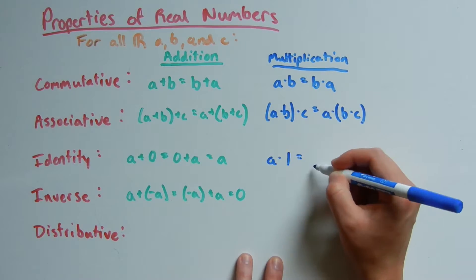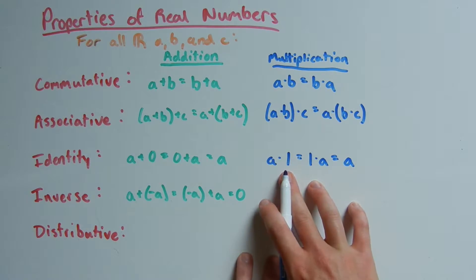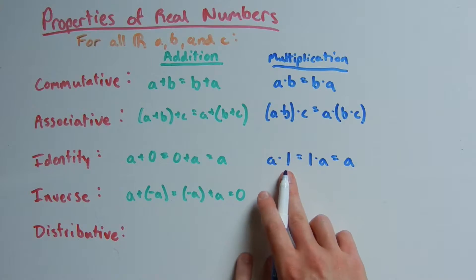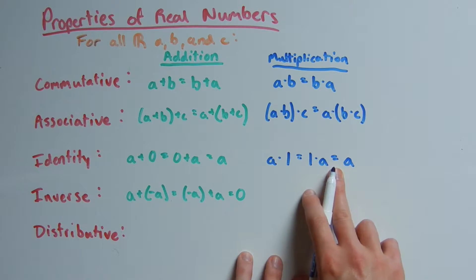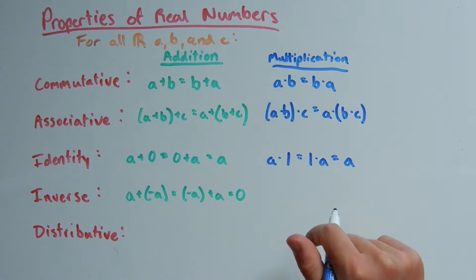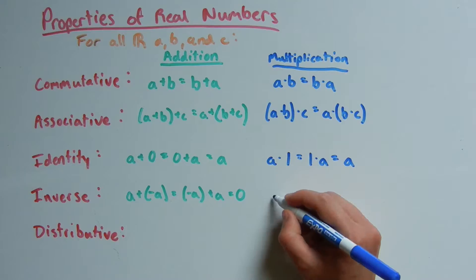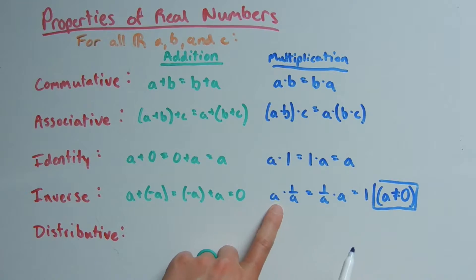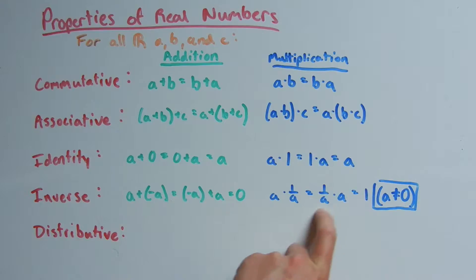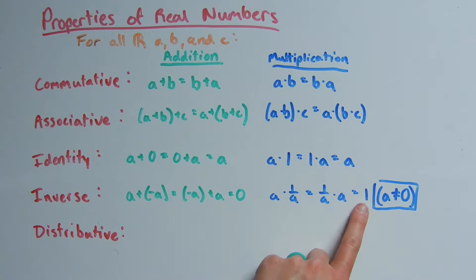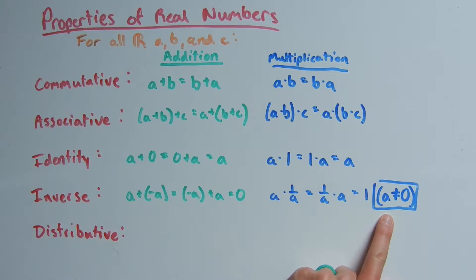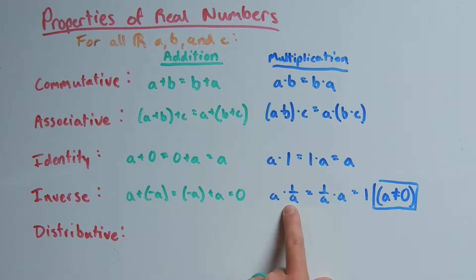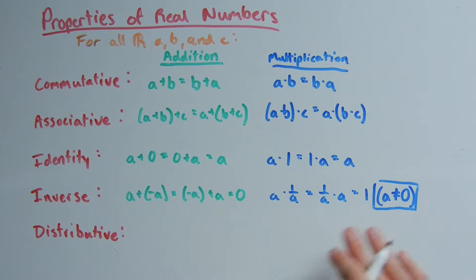The identity property for multiplication says that when you multiply 1 to a — whether that be a times 1 or 1 times a — it's going to be equal to a. The inverse property says a times 1 over a equals 1 over a times a, which equals 1. This holds true when a is not equal to 0; if a were equal to 0, 1 over 0 would be undefined.